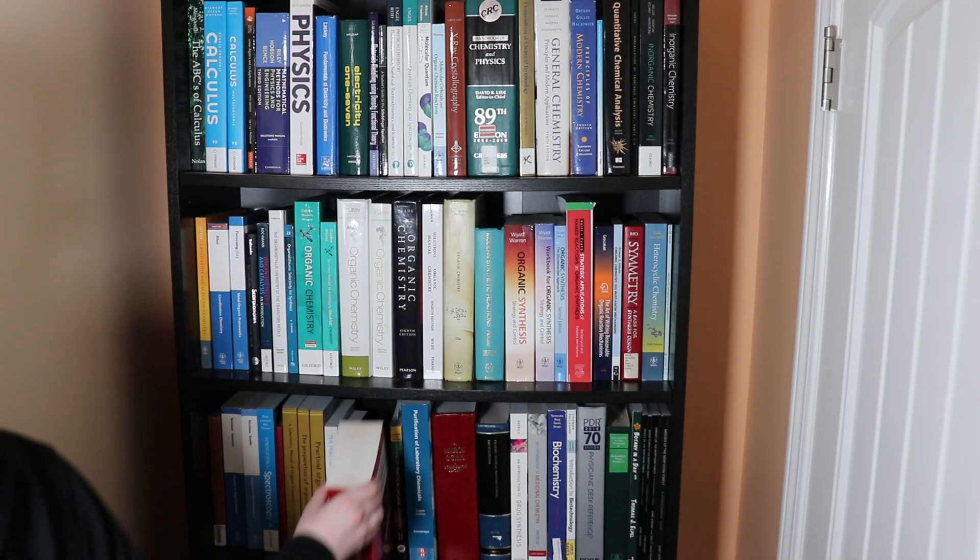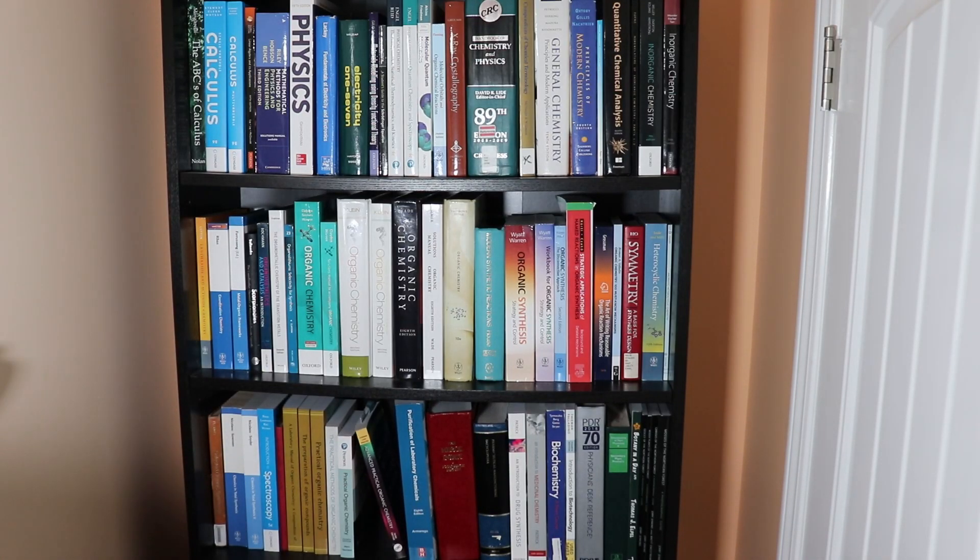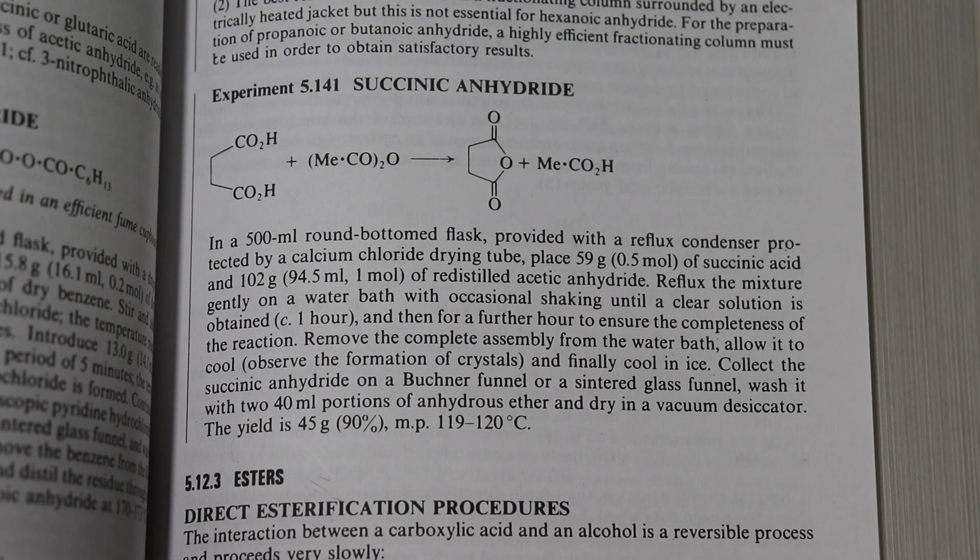In this video, I will demonstrate the preparation of succinic anhydride from succinic acid and acetic anhydride following the procedure in Vogel's Practical Organic Chemistry.